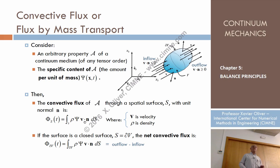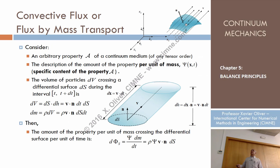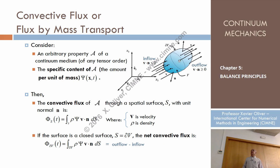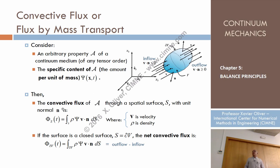The term v dot n is a dot product of two vectors, so it is a scalar — specifically, the normal component of velocity to the surface. When the surface is closed rather than open, the convective flux can still be defined. In that case, we conventionally define the normal as the outward normal, pointing from the interior to the exterior. The flux integral is then taken over the entire boundary delta V.